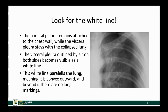On the chest x-ray, when we look for signs of pneumothorax, we in particular look for a bright white line beyond which there are no lung markings, and a white line which mimics the shape of the lung and thus is convex outward.